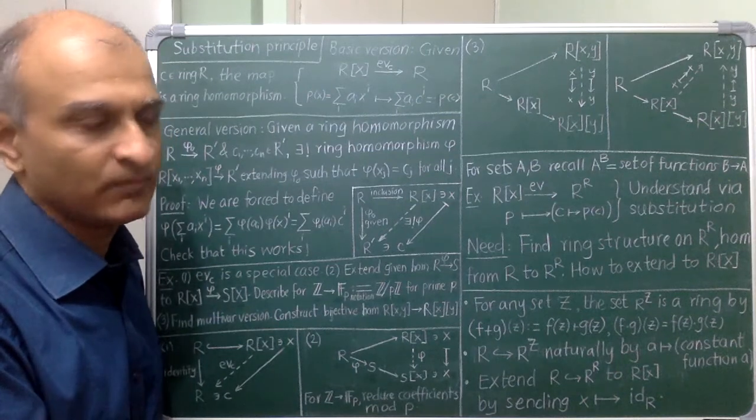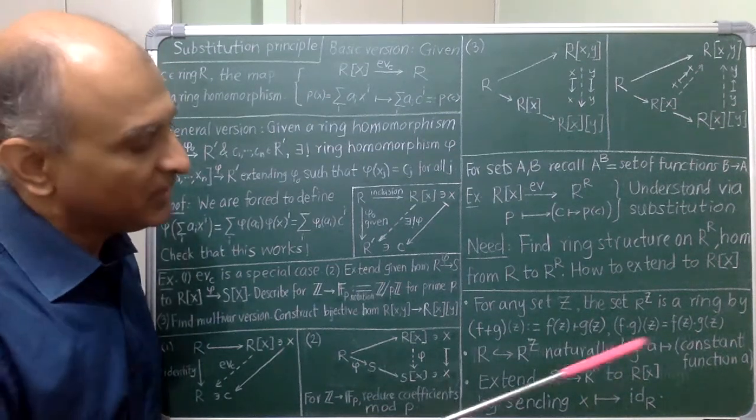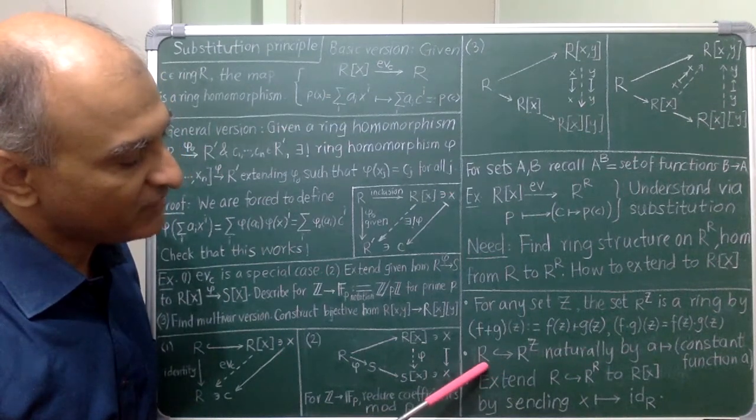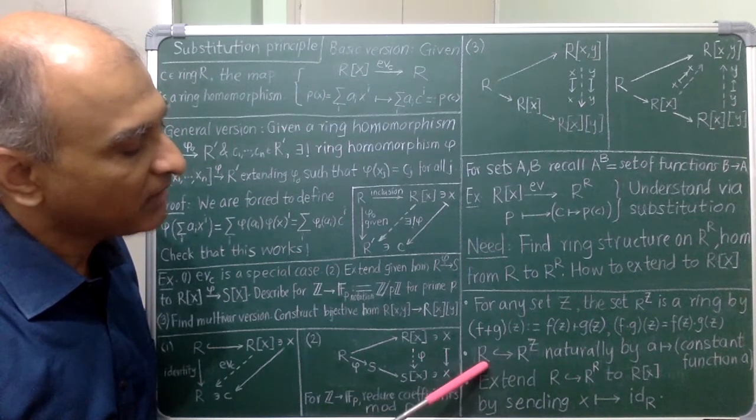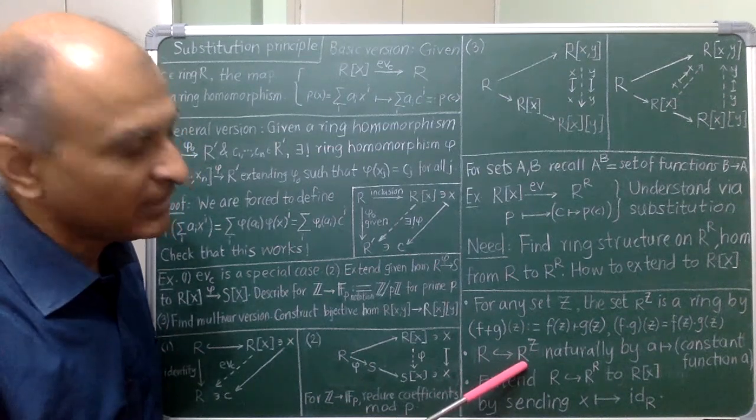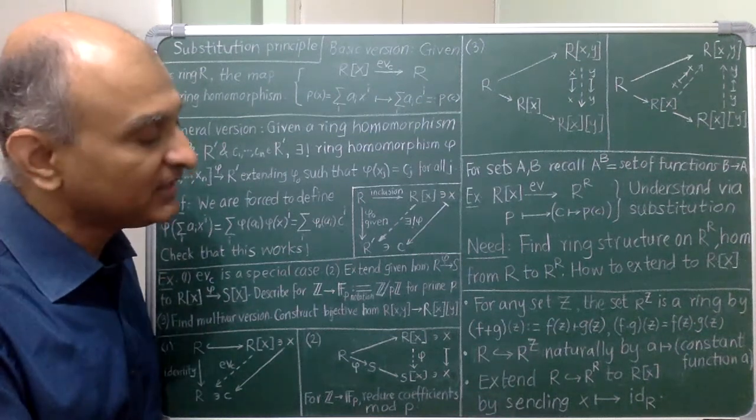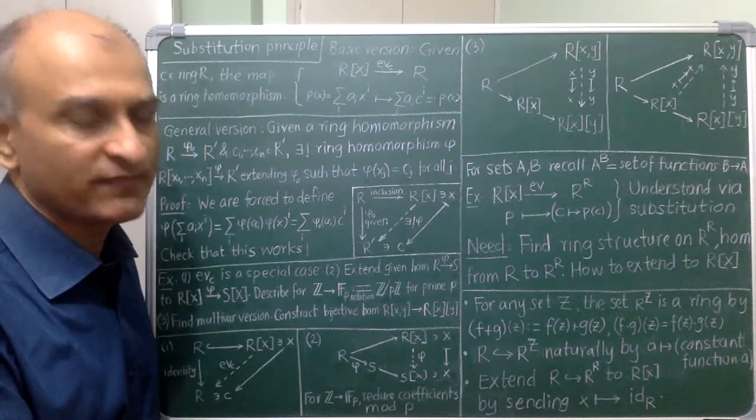In exactly the same way, you can see that R can be naturally identified as the subring of constant functions in this ring of functions. You should definitely add this function ring to your zoo of examples.